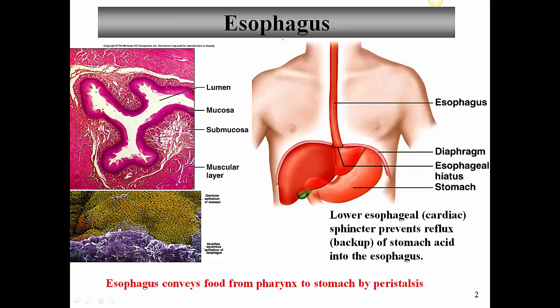The esophagus, as we mentioned in the previous lecture, is a muscular tube that connects the laryngopharynx with the stomach. And here you can see the esophagus outlined. This tube basically carries out peristalsis to move the food from the pharynx down to the stomach. Now the esophagus itself, as you see in the light micrograph on the left side, has a lumen that's largely collapsed when it's empty — when there's no food in it, the lumen is basically collapsed and it turns into a flat tube.